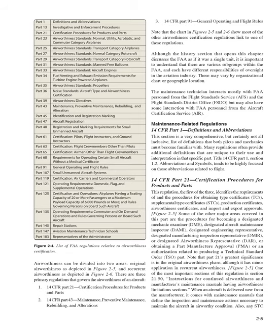There are three primary regulations that govern the airworthiness of an aircraft: 14 CFR Part 21, Certification Procedures for Products and Parts; 14 CFR Part 43, Maintenance, Preventive Maintenance, Rebuilding, and Alterations; and 14 CFR Part 91, General Operating and Flight Rules. Note that the chart in Figures 2-5 and 2-6 shows most of the other airworthiness certification regulations linked to one of these. The maintenance technician interacts mostly with FAA personnel from the Flight Standards Service (AFS), the Flight Standards District Office (FSDO), and may also interact with the Aircraft Certification Service (AIR).